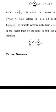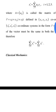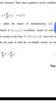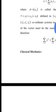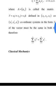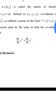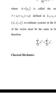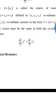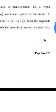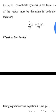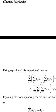Let a vector r̄ = x1·i + x2·j + x3·k be defined in the x1, x2, x3 coordinate system. We transform to the x1', x2', x3' coordinate system in the form r̄ = x1'·i + x2'·j + x3'·k. Since the magnitude of the vector must be the same in both coordinate systems, we must have: Σ xi'² = Σ xi².